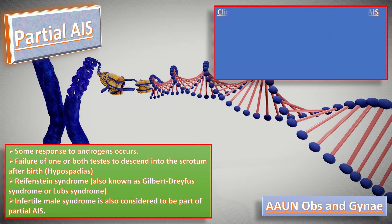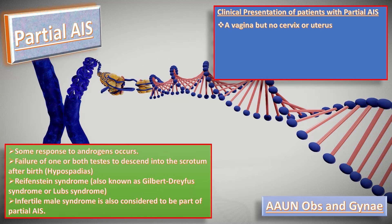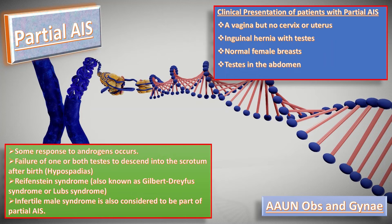The clinical presentation in patients with partial AIS includes: a vagina but no cervix or uterus, inguinal hernia with a testis that can be felt during physical examination, normal female breasts, and testes located in the abdomen or other atypical locations in the body.